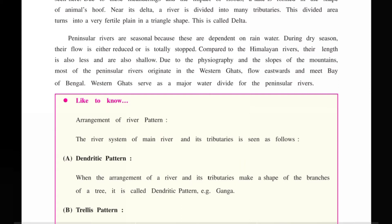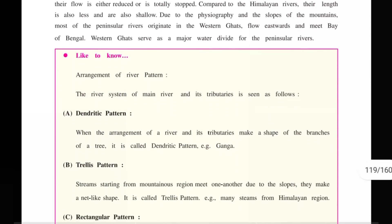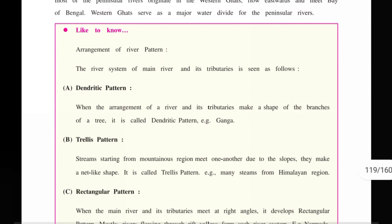Due to physiography and mountain slope, most of the peninsular rivers originate in the Western Ghats. The rivers flow eastward and then into the Bay of Bengal. The Western Ghats serve as a major water divide for the peninsular rivers, dividing the river water into two parts.